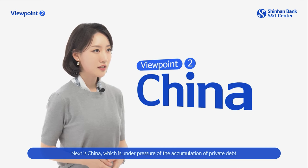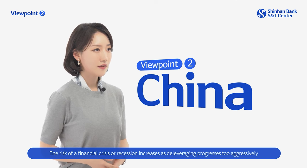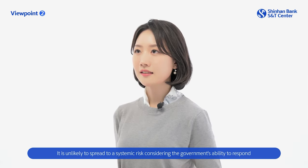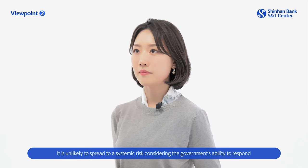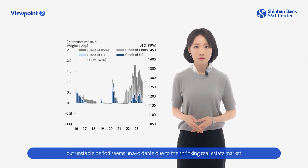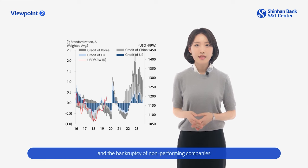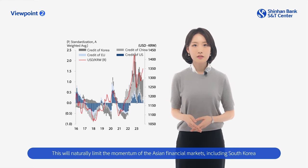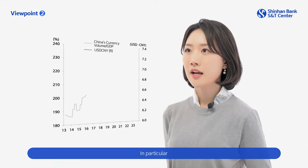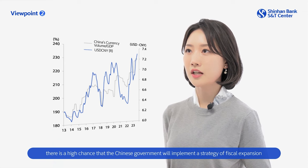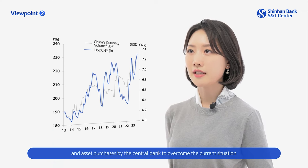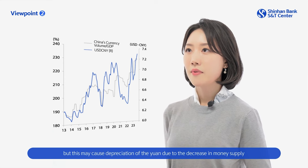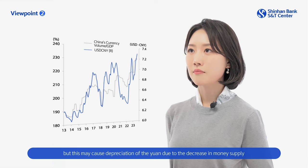Next is China, which is under pressure of the accumulation of private debt. The risk of a financial crisis or recession increases as deleveraging progresses too aggressively. It's unlikely to spread to a systemic risk considering the government's ability to respond. But an unstable period seems unavoidable due to the shrinking real estate market and the bankruptcy of non-performing companies. This will naturally limit the momentum of the Asian financial markets, including South Korea. There is a high chance that the Chinese government will implement a strategy of fiscal expansion and asset purchases by the central bank, which may cause depreciation of the yuan due to the increase in money supply.